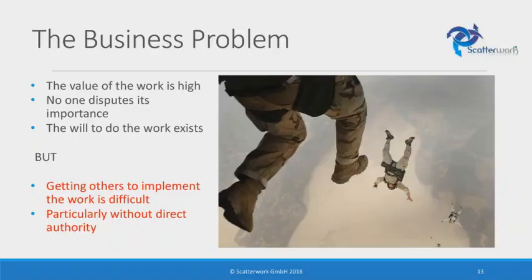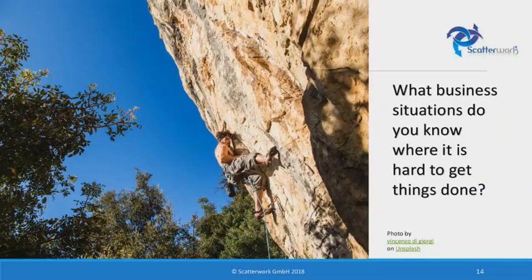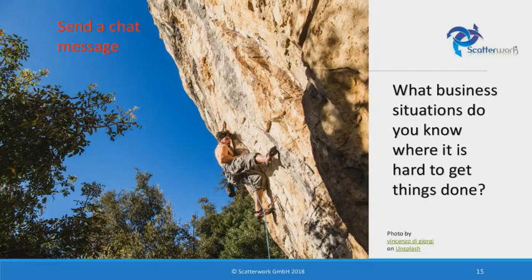The reason these are challenging is that the value of the work is high, so everyone says please do it. Nobody disputes that it's important and everyone wants to do the work — but getting everyone else to actually do the work is very difficult, particularly if you don't have direct authority, which is a very common situation. You have something you're supposed to do, and by definition a lot of the people you're interacting with are not in your direct chain of command, especially if they're outside the company. You can't just tell them what to do, and yet you still have to deliver.